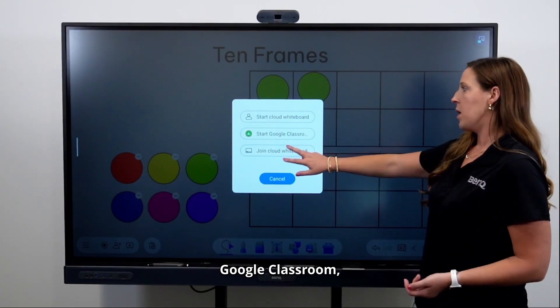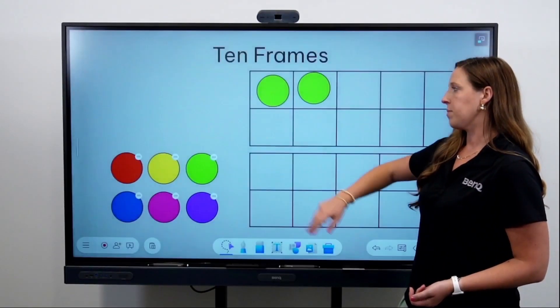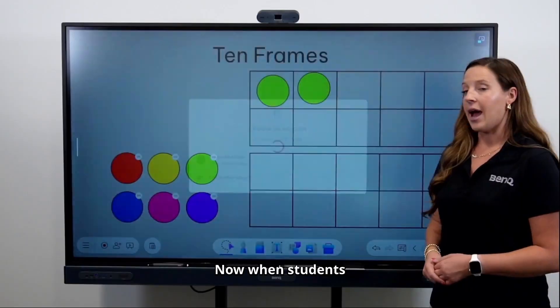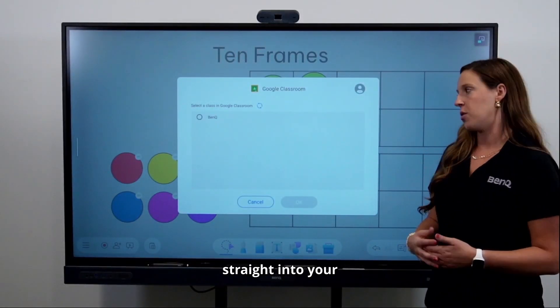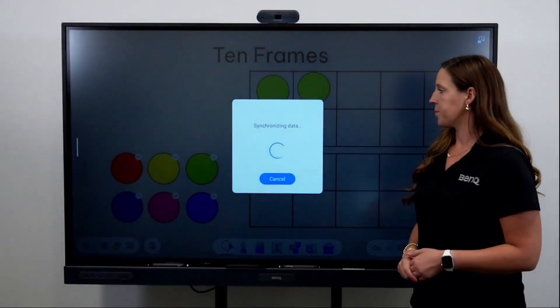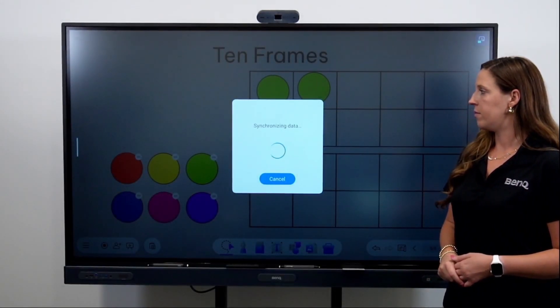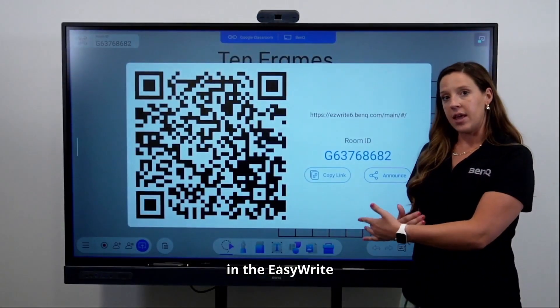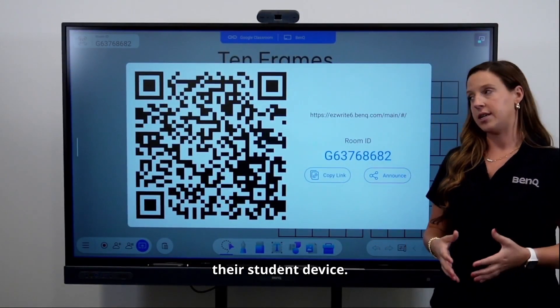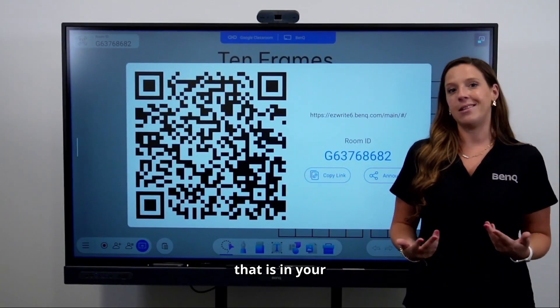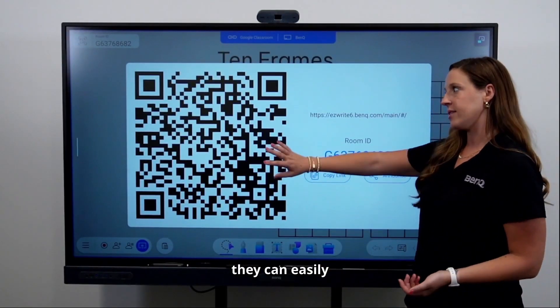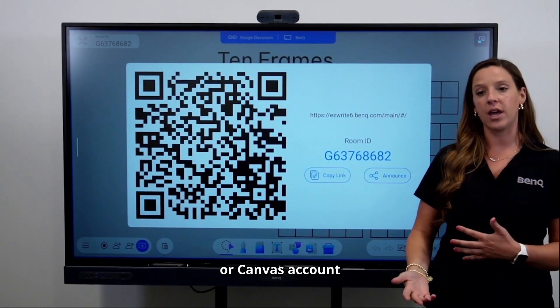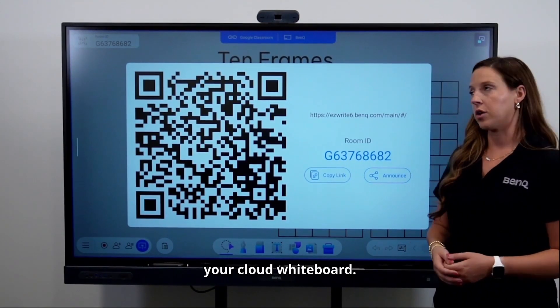Or if you have Google Classroom, you can start Google Classroom and it will drop the link directly into your class. Now when students click on the link, it takes them straight into your Google Classroom. If you have a student that isn't in your Google Classroom, they can easily scan this QR code. Or you can drop this link with the session ID into your Schoology or Canvas account for students to easily access and join your Cloud Whiteboard.